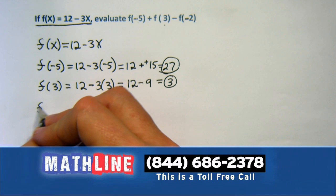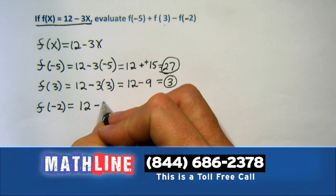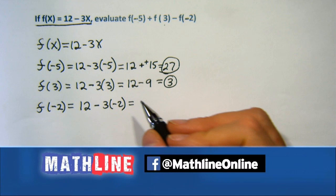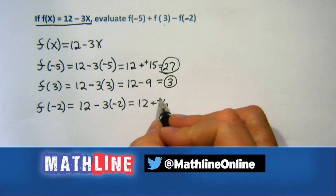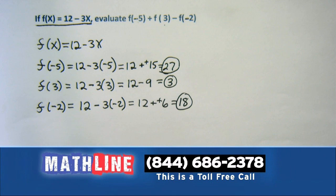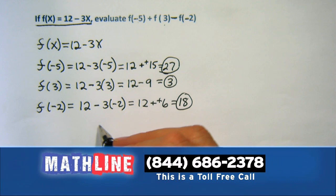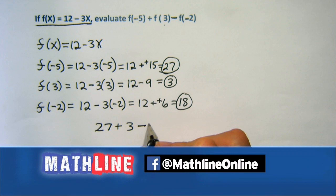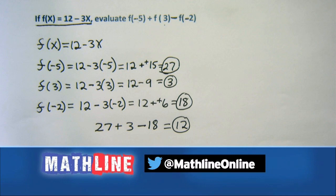Now here comes our last element of fun — put in the function of negative 2. We're back to one of those negatives again. So we say 12 minus 3 times negative 2. Remember, parentheses around that negative 2. That's 12 subtract negative 6, which means 12 plus 6, and we've got 18. So the results are 27, plus 3, minus 18 — and I'm seeing 12. Quite a few of our Facebook folks saw 12 as well.